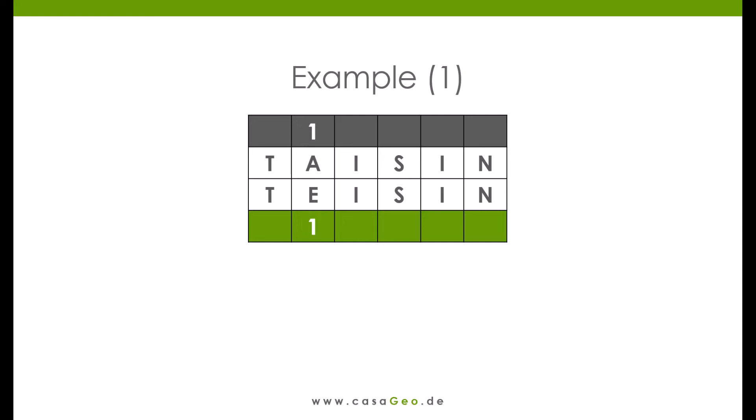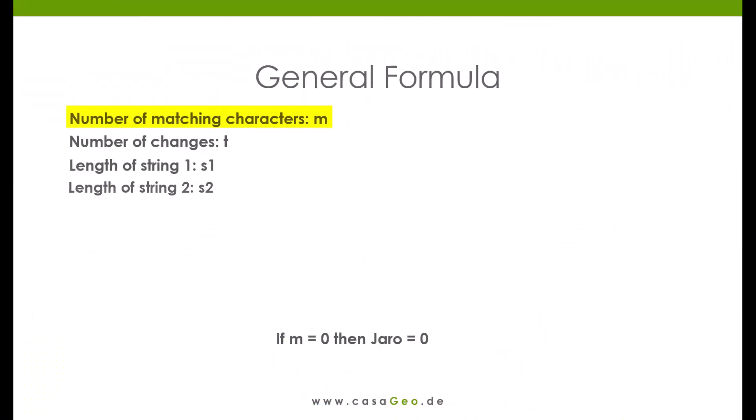However, the calculation of the score for Jaro is different from Levenstein. Let us call the number of matching characters M and the number of changes T. Then the score in this example is calculated according to the following formula: M by length of the first word, plus M by length of the second word, plus M minus T by M, and the total sum by 3.